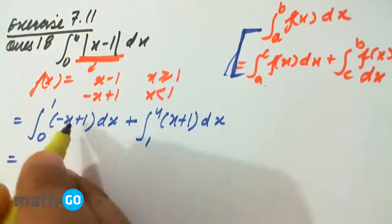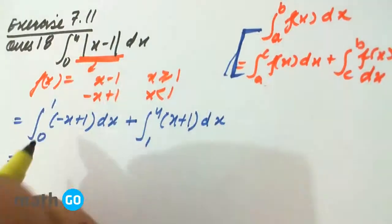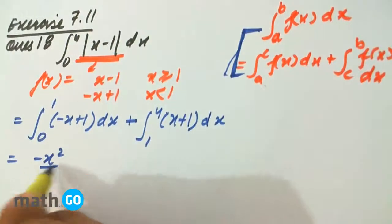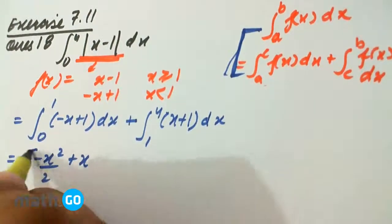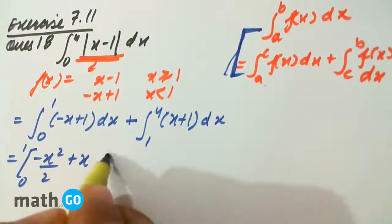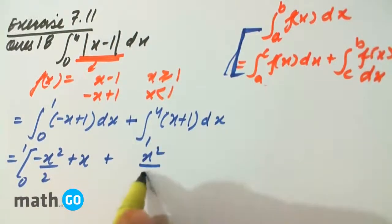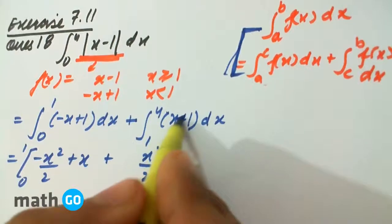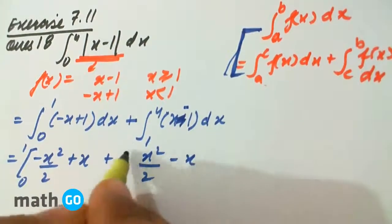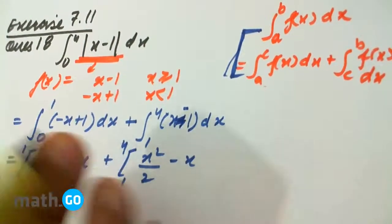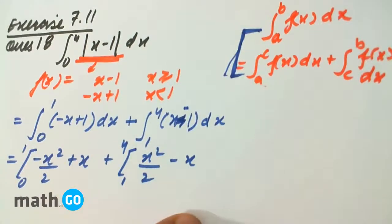So now the question becomes very easy. We get x squared by 2 plus x, limits from 0 to 1, plus... this, sorry, it has to be minus, x squared by 4 minus x, from 1 to 4, fine.